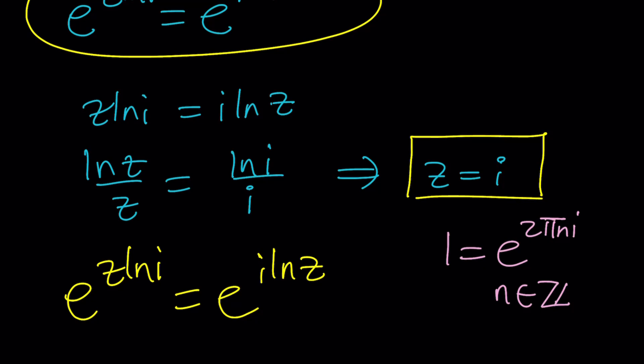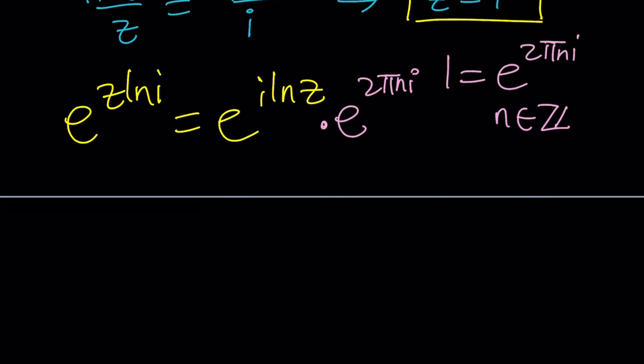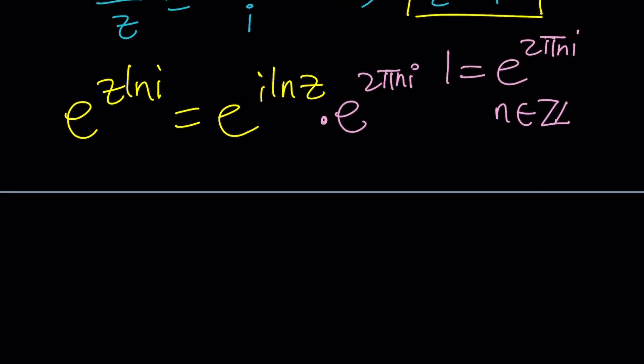So, when you replace n with any integer value, you're going to get 1. Obviously, n equals 0 is going to give you the real value. n equals 1 is going to give you e to the power 2πi, which is 1 again. All the time it's 1, but there are infinitely many ways to represent it. Make sense? So, having said that, I can go ahead and multiply the right-hand side by e to the power 2πni without changing the value of this equation. Make sense? So far so good? Great. This is the equation we're going to be looking at.